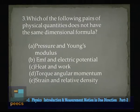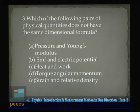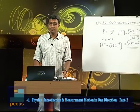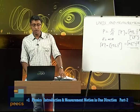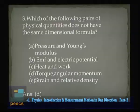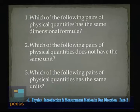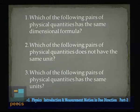The above question may also appear as: which of the following pairs of physical quantities does not have the same dimensional formula? Options include pressure and Young's modulus, EMF and electric potential, heat and work, torque and angular momentum, strain and relative density. Calculate the dimensional formula of each quantity to find the answer — it is D. Similarly, questions can ask which pairs have the same dimensional formula, or which pairs have the same or different units.